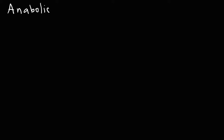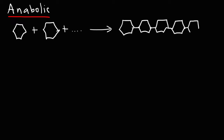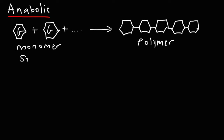Let me give you an example of an anabolic reaction. Let's say we're combining many glucose molecules to make a large molecule. Glucose is a monomer, and we're combining many glucose units to make a polymer — so this would be a polysaccharide. We're taking many small molecules and building them up to form a large molecule, so that would be an anabolic process.